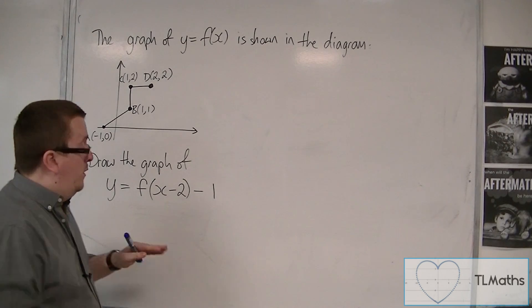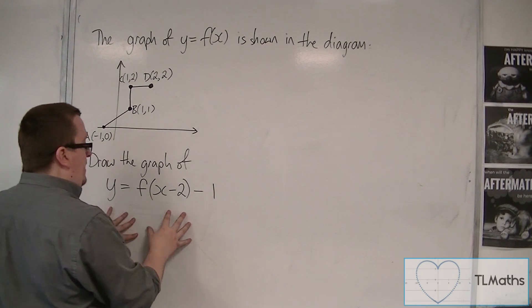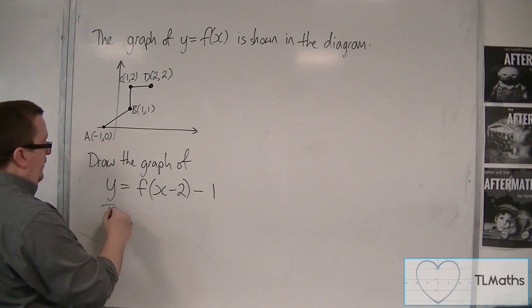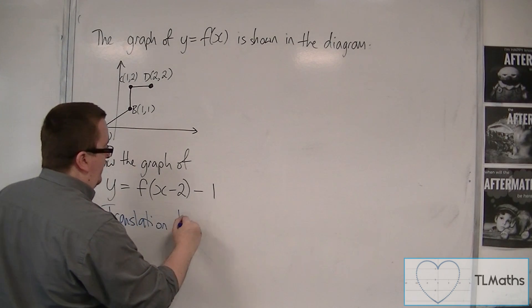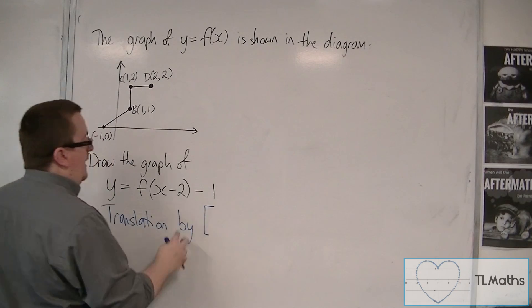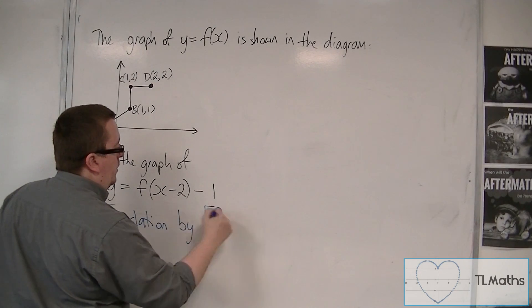So we need to identify what sort of transformation this is. This, of course, is a translation, and we need to identify the translation vector as 2 minus 1.